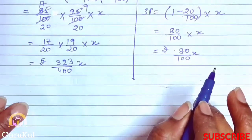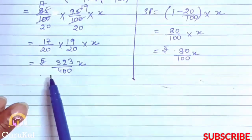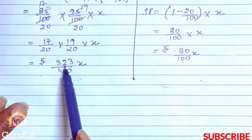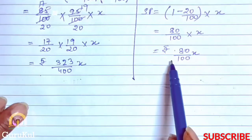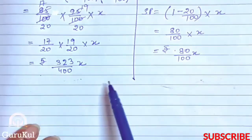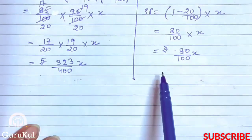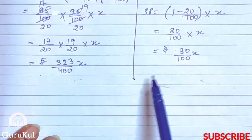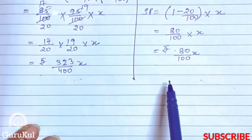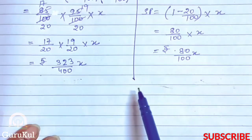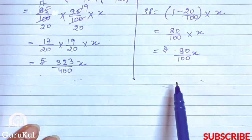Now, the first dealer SP is 323x/400 and the second dealer SP is 80x/100. To compare these two, we need to make sure the denominators are the same — we need to make these two fractions equivalent so we can decide which discount is better.